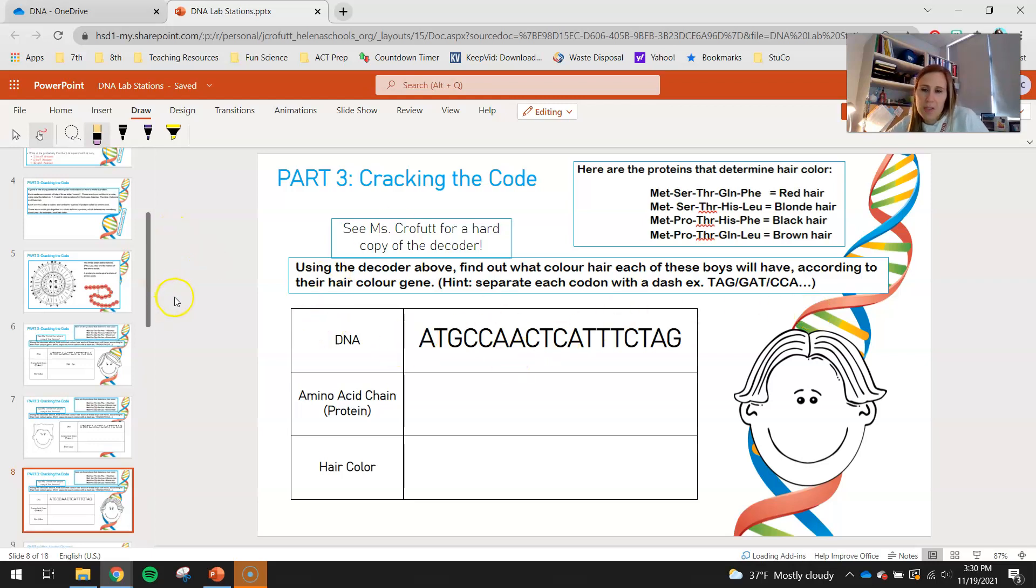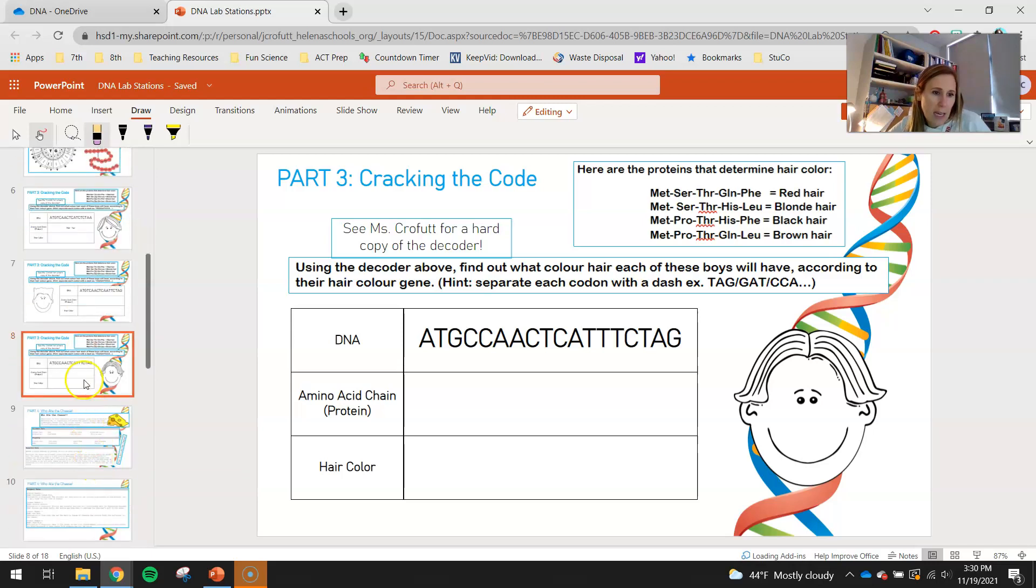So figure out what colors his hair is. Remember, start by drawing those lines and dividing those into three-letter codons. And then using your guys' super-duper decoder ring, starting with the middle and working out to the darker rings. That ends your guys' part three, cracking the code part of the DNA lab.